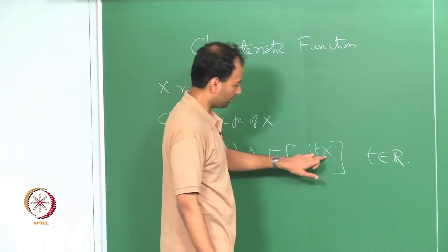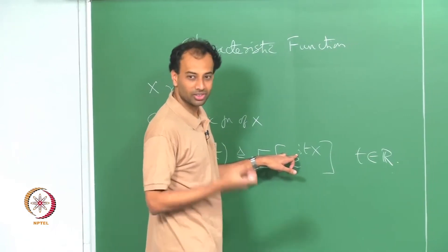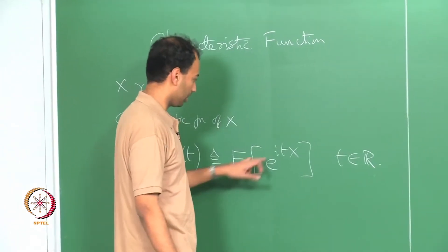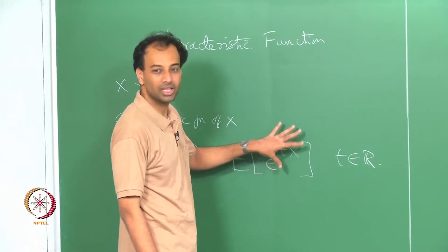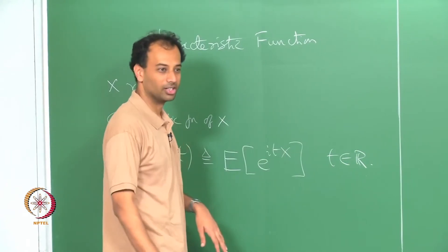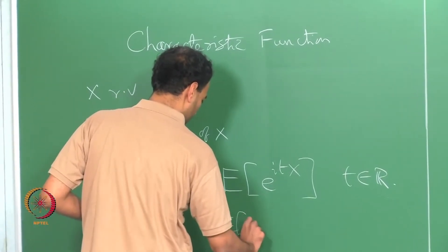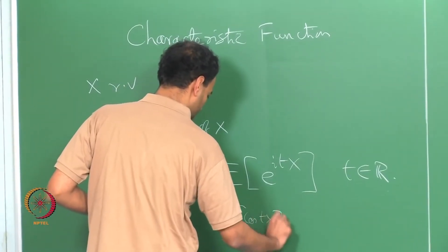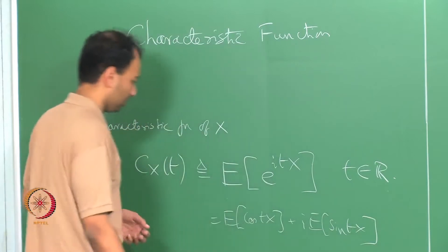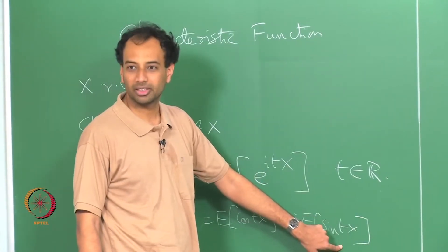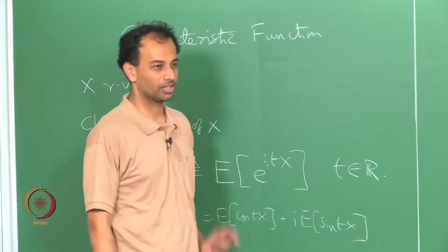This t is some real parameter, x is your random variable, and i is the square root of minus 1, so e^{itx} is a complex-valued random variable. You can actually take this as the expectation of cos(tx) plus i times the expectation of sin(tx), where cos(tx) and sin(tx) are random variables parameterized by t.